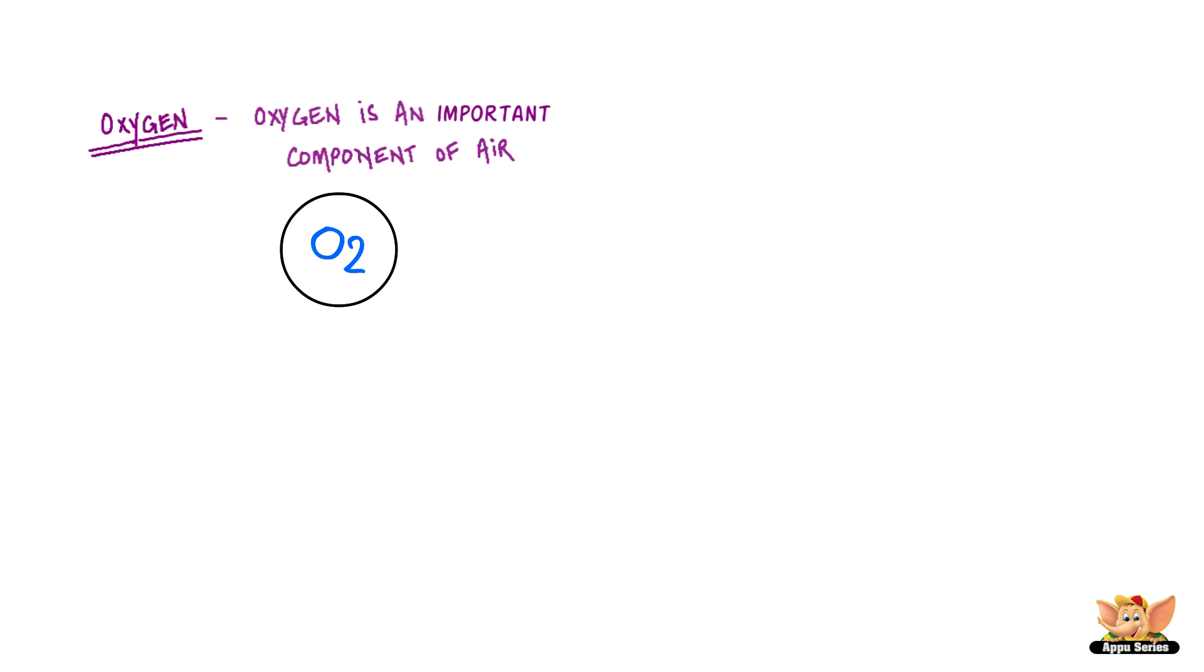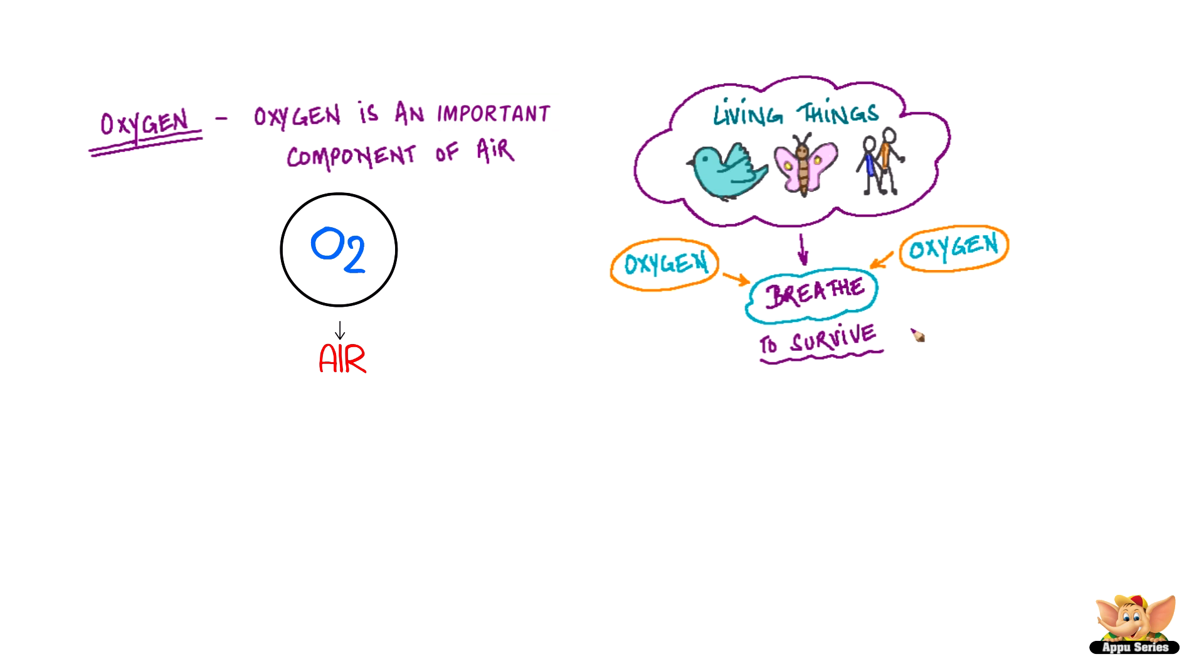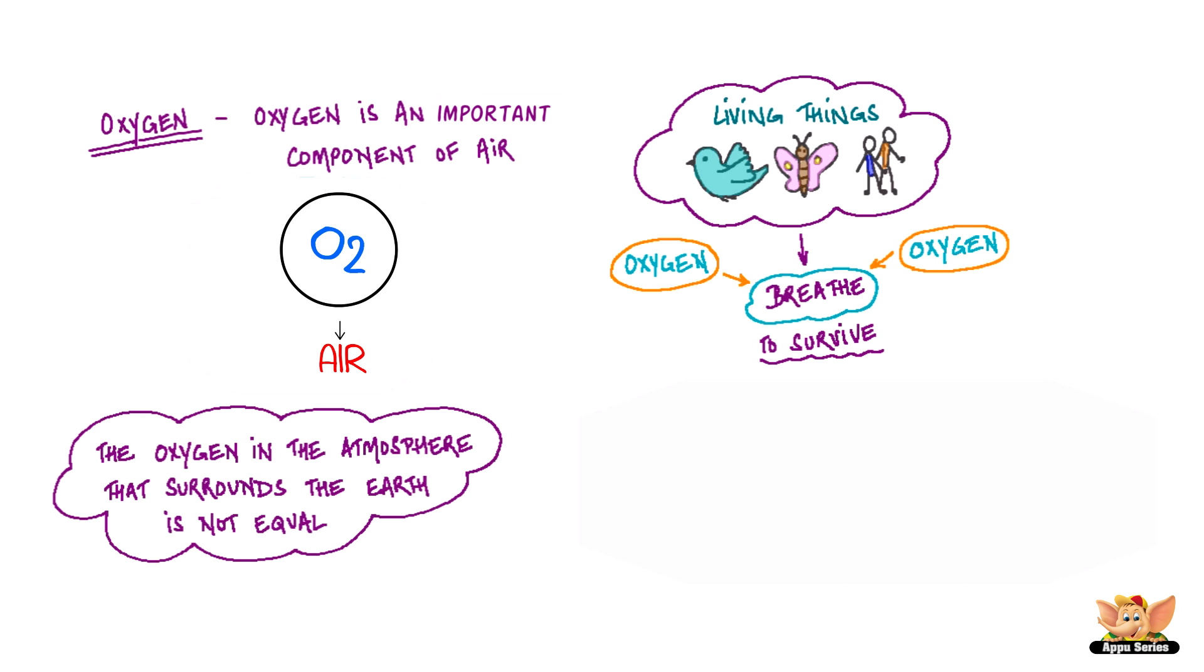Oxygen is an important component of air. Most living things breathe oxygen to survive. The oxygen in the atmosphere that surrounds the earth is not equal. For example, there is less oxygen in the air at the top of high mountains.